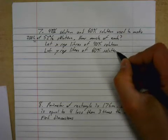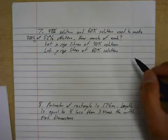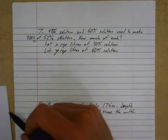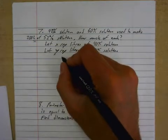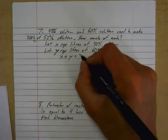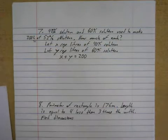Okay, so what is your first equation? Well, I'm going to take the X and the Y, I'm going to add them together because that's going to make 200 liters. So X plus Y, those are my amounts, and they have to add up to 200 or I didn't make a 200 liter solution.